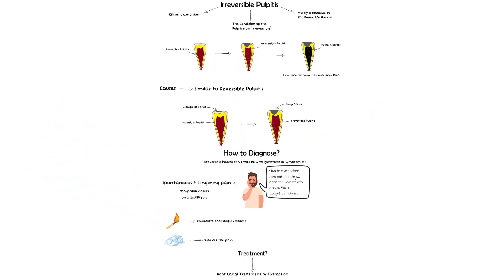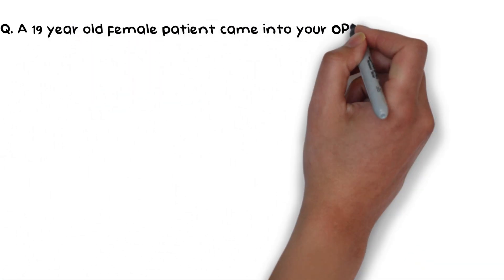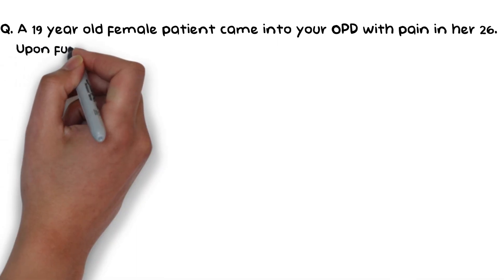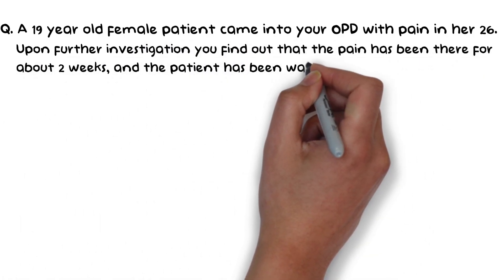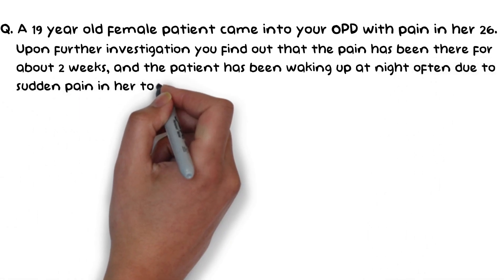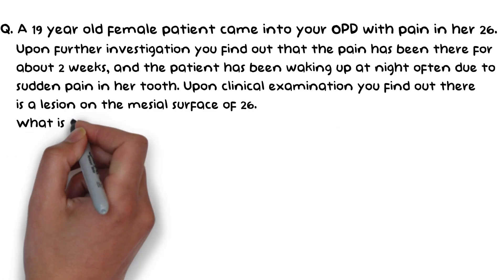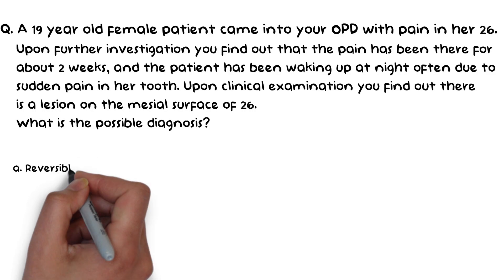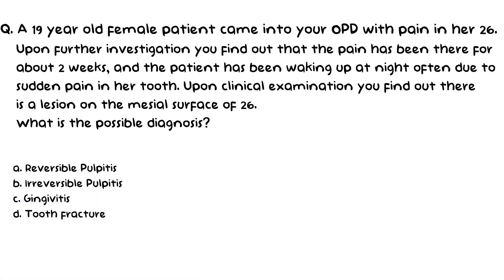Let's do a simple clinical question for better understanding. A 19-year-old female patient came into your OPD with pain in her 2-6, meaning upper left molar in the FDI system. Upon further investigation, the pain has been present for about 2 weeks and the patient has been waking up at night due to sudden pain in her tooth. Upon clinical examination, there is a lesion on the mesial surface of 2-6. What is your possible diagnosis? A) Reversible pulpitis, B) Irreversible pulpitis, C) Gingivitis, D) Tooth fracture.